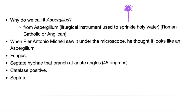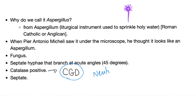Aspergillus has septate hyphae and branches at acute angles of 45 degrees or less. It is catalase positive — this matters because if you suffer from chronic granulomatous disease, this is going to be really bad, since in chronic granulomatous disease your neutrophils are essentially non-functional.